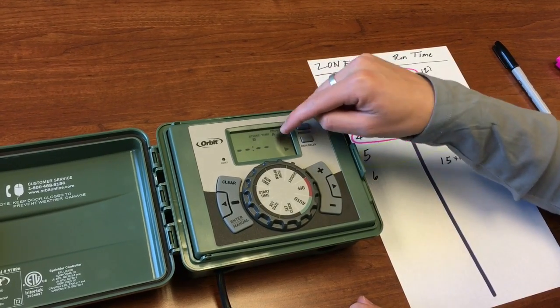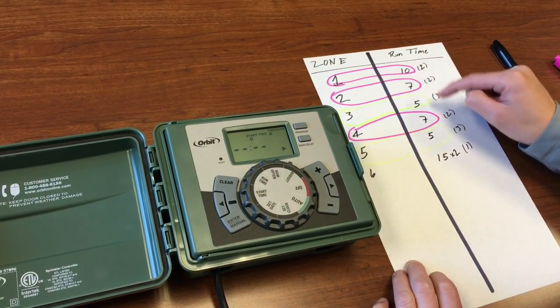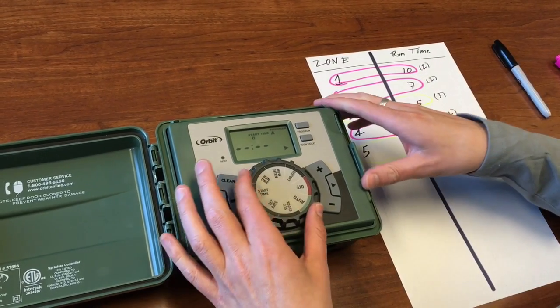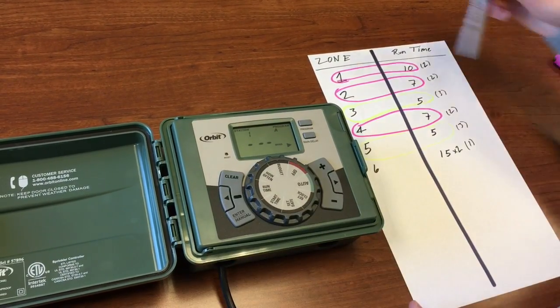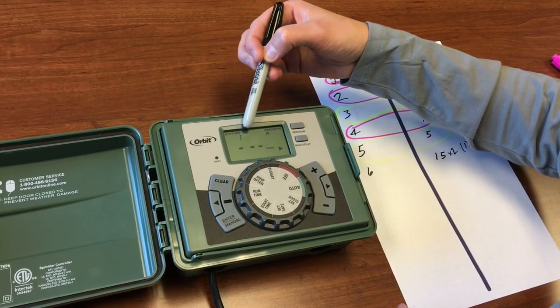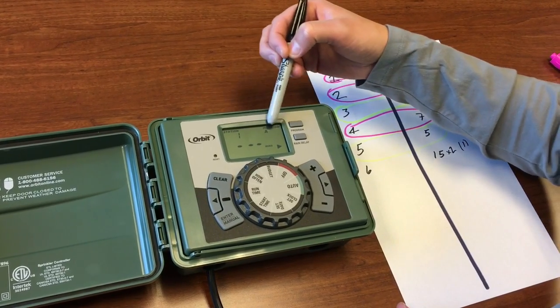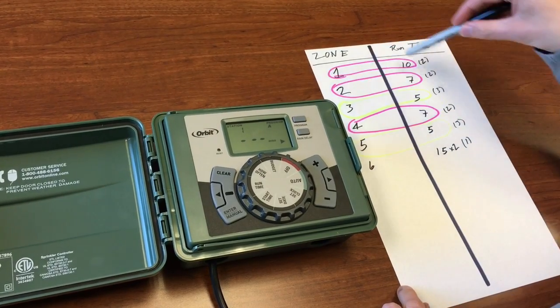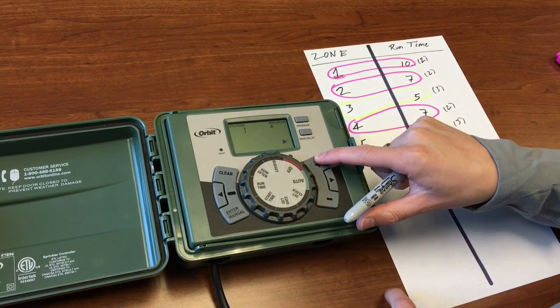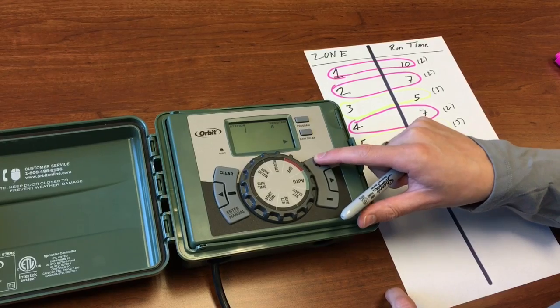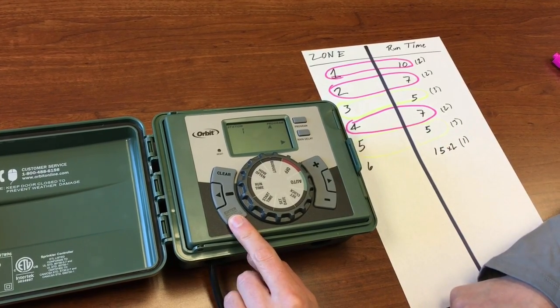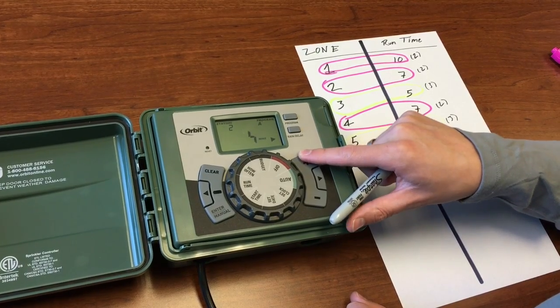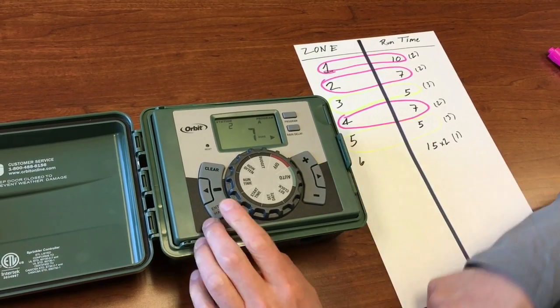We're going to adjust the clock down to 3 a.m. and we'll click enter. It's going to move on to start time number two. Now these ones only need to run once each time and they need to run every other day. So let's give them a run time. Station 1 is for 10 minutes. Hit enter and it moves to station 2 which is for 7 minutes.